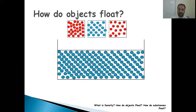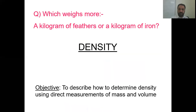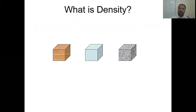Which weighs more — a kilogram of feather or a kilogram of iron? Of course both are one kilogram, so the mass is the same and therefore the weight is the same.